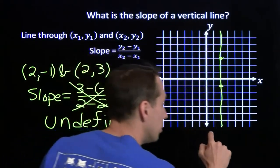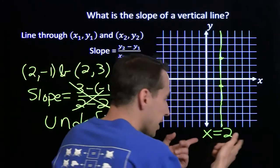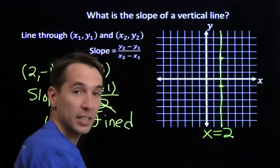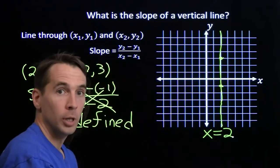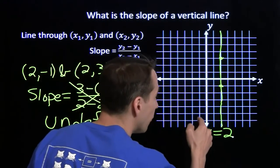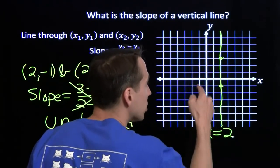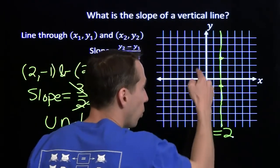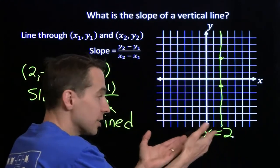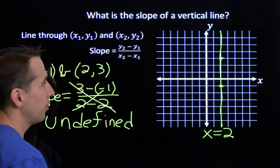The way we describe this line: every point on it has x-coordinate equal to 2, so this is the graph of x = 2. If someone asks for the graph of x = -1, you just find the vertical line where all points have x-coordinate equal to -1. All vertical lines look like this — x equal to something.